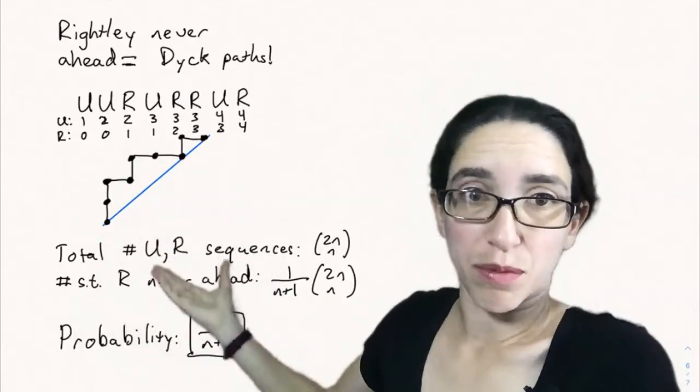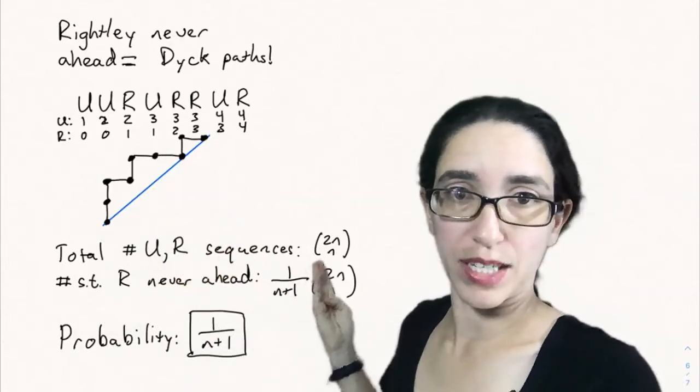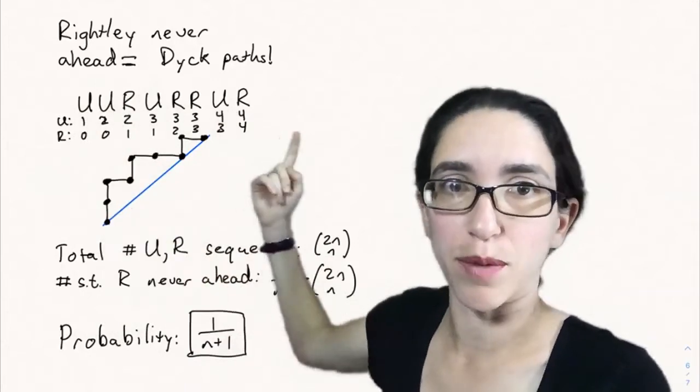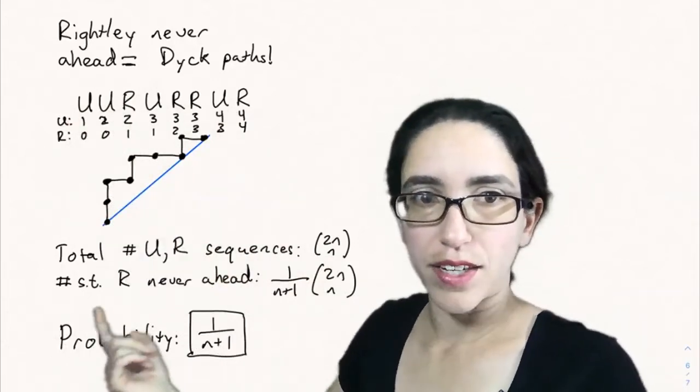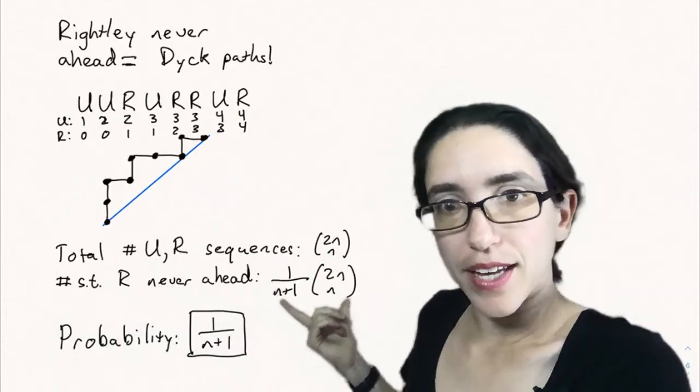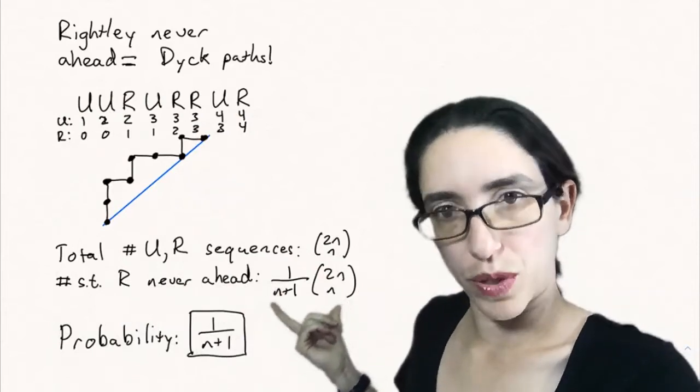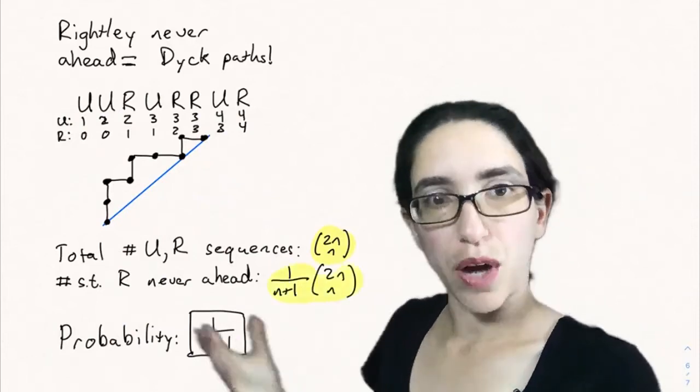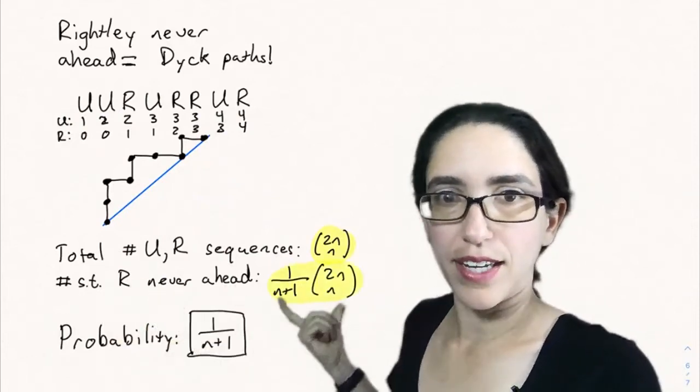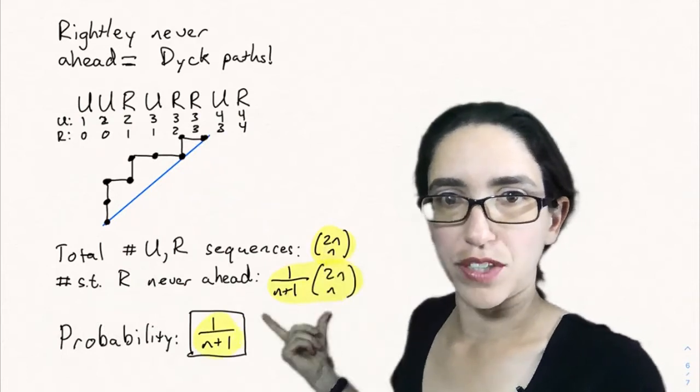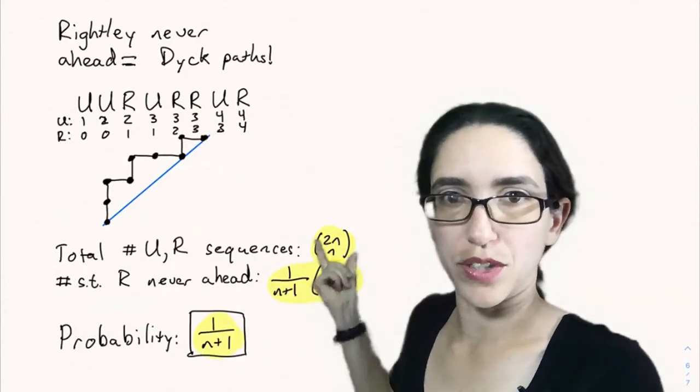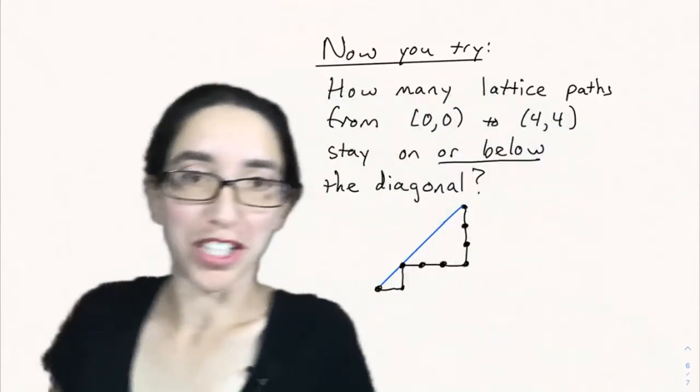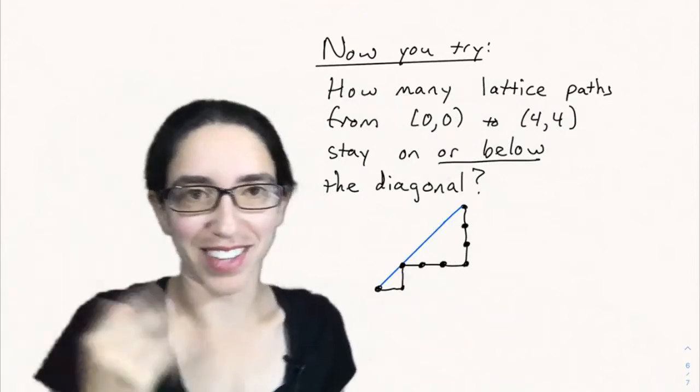Now we can calculate this probability because the total number of up-right sequences you can have is 2n choose n, because you choose which n spots the up voters line up in. And then the number such that R is never ahead is the Catalan number, which we know is 1 over n plus 1 times 2n choose n. The probability that rightly is never ahead is this divided by that, which is 1 over n plus 1 times 2n choose n divided by 2n choose n, which is just 1 over n plus 1. So there's a 1 over n plus 1 chance that rightly is never ahead in that election.